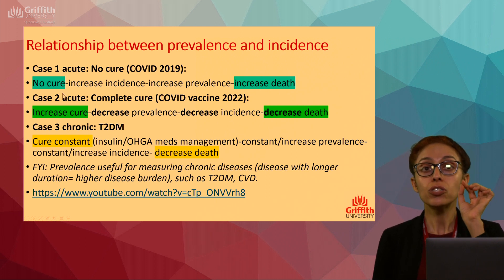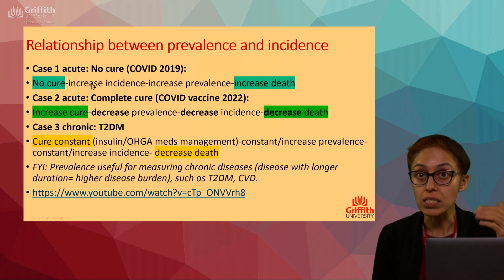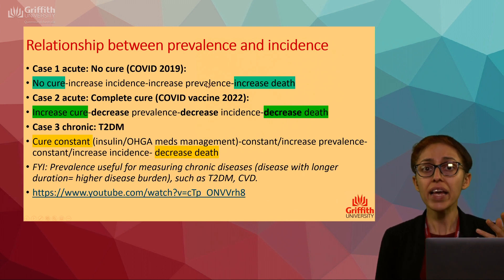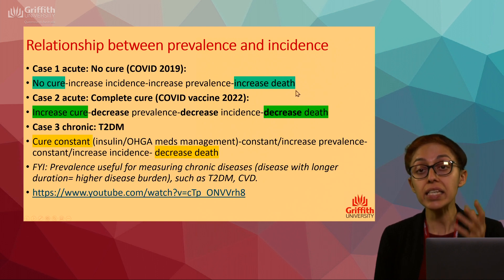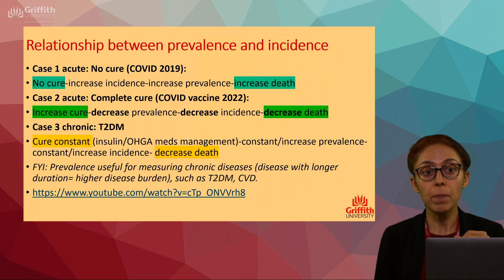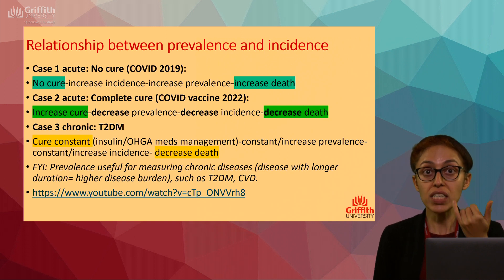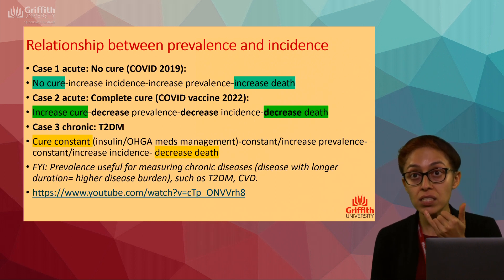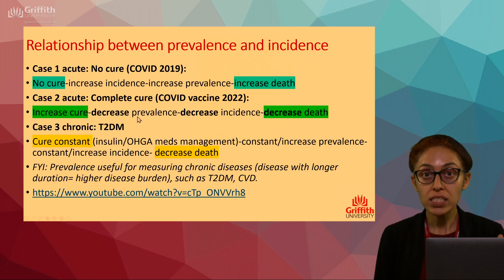In 2019, when COVID first emerged, there was no cure and no vaccination. When there is no cure for an acute condition, you have increased incidence, increased prevalence, and increased death rate. People kept getting COVID, recovering, and getting it again. Everything was increasing because there was no cure.